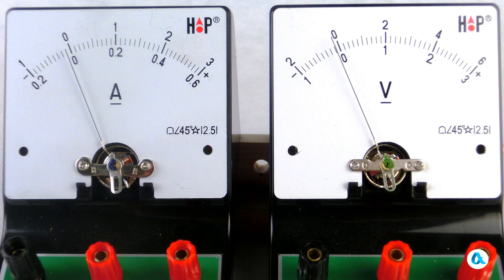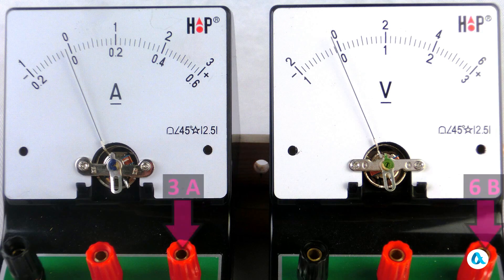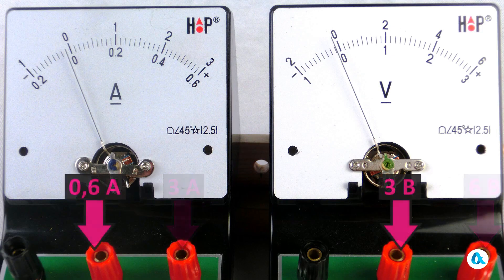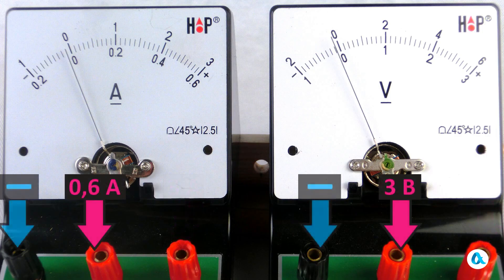To measure higher currents and voltages, the wire going to the positive terminal should be plugged into the right red terminal and for lower values, into the left one. The wire going to the negative terminal is plugged into the black terminal.